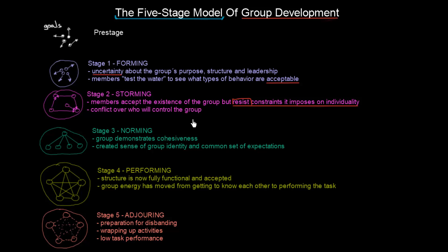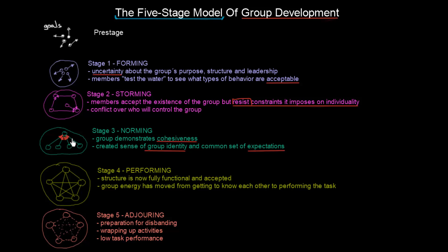The third stage is called norming. Here the group demonstrates cohesiveness — group members have stopped resisting the constraints on individuality and the group is now cohesive. A sense of group identity and a common set of expectations has been created. As you can see from the picture, members have started to understand that there should be a common goal and a leader to represent that goal.